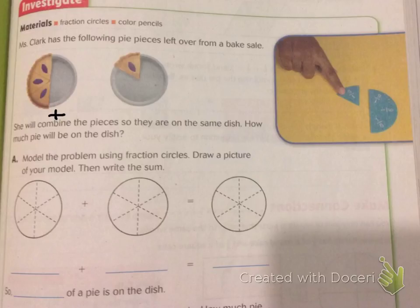It says model the problem using fraction circles. Draw a picture of your model. Then write the sum. That is pretty nice. They kind of drew the pictures for us here. So the first pie has three pieces. So half is colored in. So I am going to color in this half. The second pie plate only has that one slice. So I am going to color in one slice over here. And now if I had the three slices and I combined it with that extra slice, I would have this many first and then combined it with that other piece. I would have four of the six pieces. So to model the equation, it would be three-sixths plus one-sixths equals four-sixths.